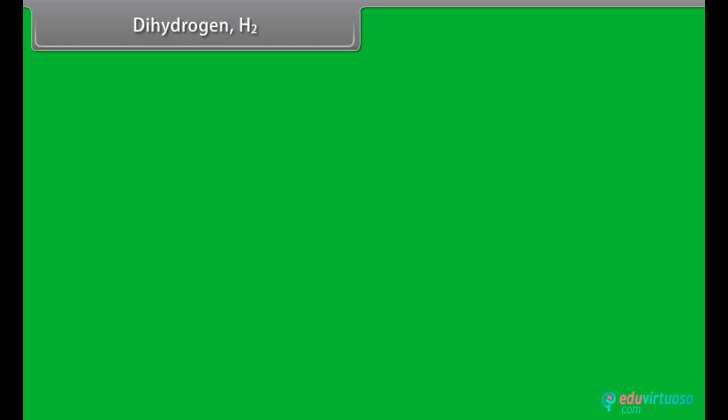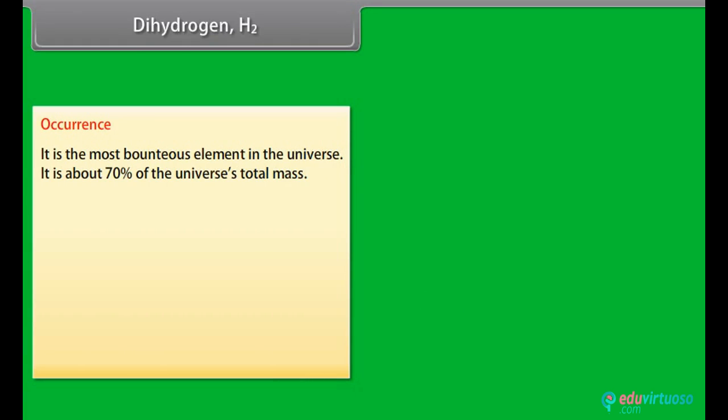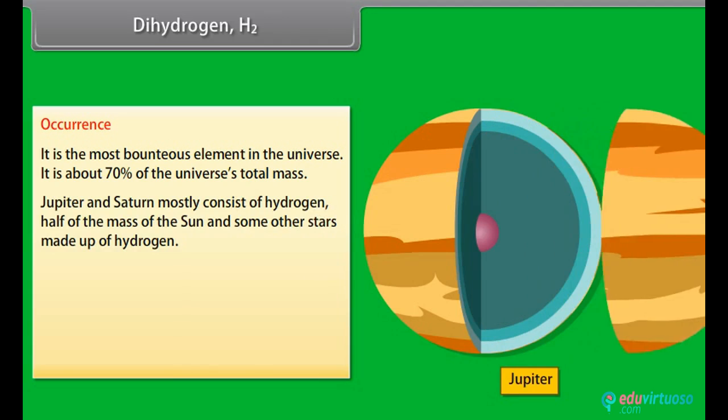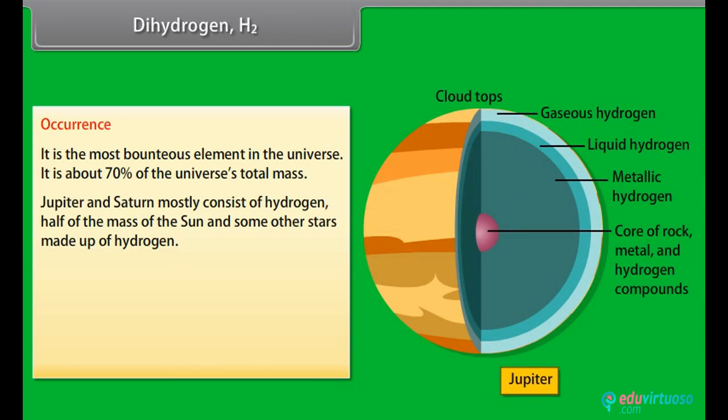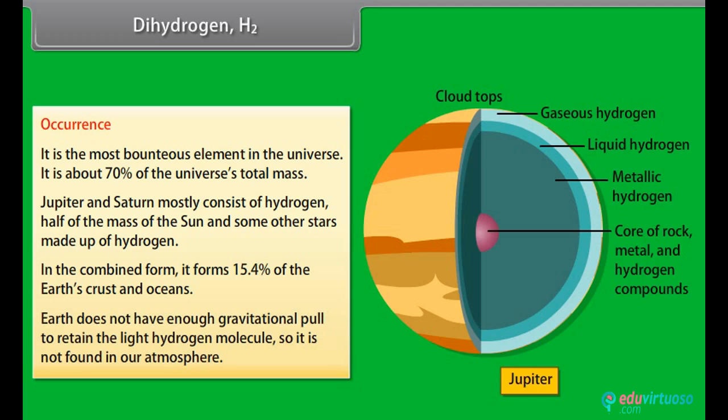Dihydrogen H2 Occurrence. Dihydrogen is the most bounteous element in the universe. It is about 70% of the universe's total mass. Jupiter and Saturn mostly consist of hydrogen. Half of the mass of the sun and some other stars made up of hydrogen. In the combined form, it forms 15.4% of the Earth's crust and oceans. Earth does not have enough gravitational pull to retain the light hydrogen molecule. So, it is not found in our atmosphere.